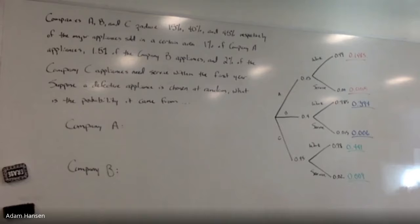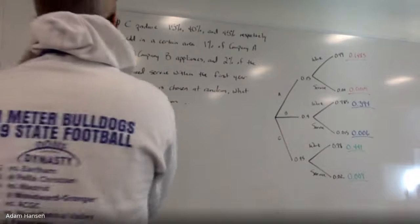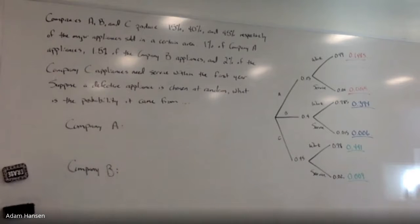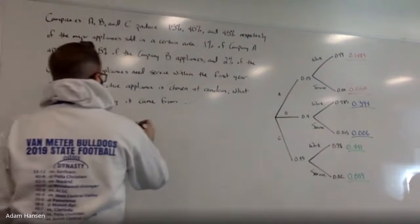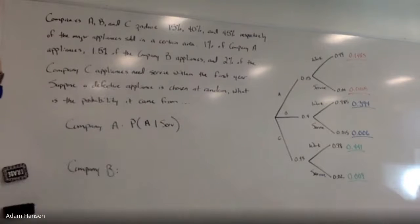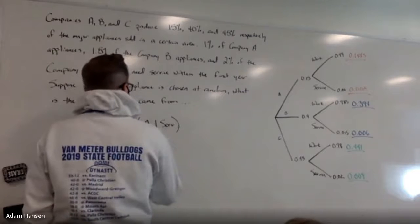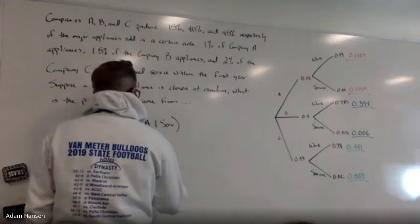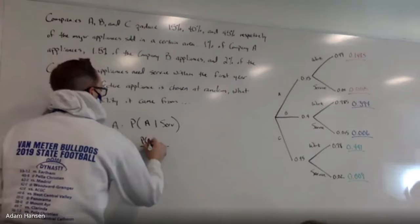Okay, tree's built, let's use it to find some of these probabilities. Suppose the defective appliance is chosen at random, what's the probability that it came from Company A? So what do I have to assume about this appliance first? What's been given to us for our initial condition? Given that it's defective, what's the probability that it came from A? So putting that together as a conditional probability, what's the chance if I know it needs servicing, it came from Company A? That would be, out of all the appliances that need servicing, what part of those were also from Company A?